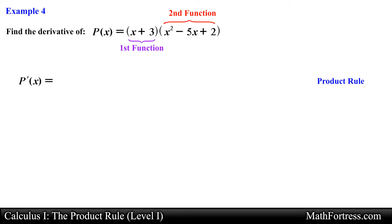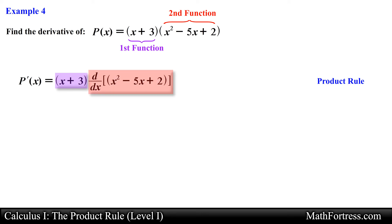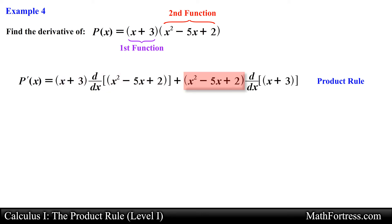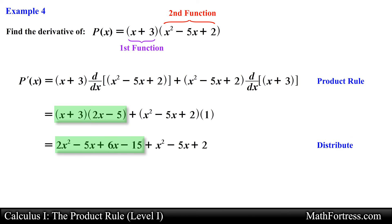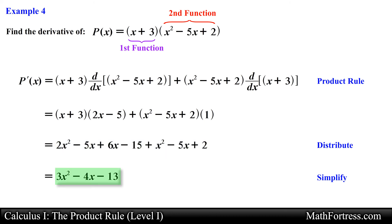Next we go ahead and apply the product rule. So we take the first function and multiply it by the derivative of the second function, and add the second function times the derivative of the first function. Next we go ahead and foil the expression on the left. Then we simplify the expression by combining like terms, yielding the final answer equal to 3x squared minus 4x minus 13.